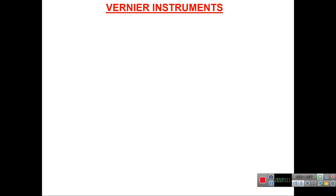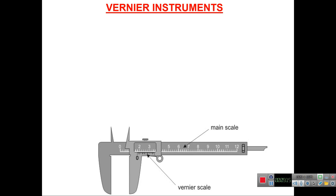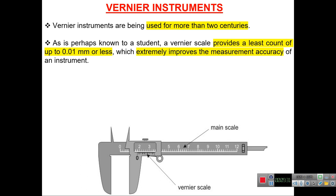Another linear measurement instrument is the vernier instrument — an example being the vernier caliper. Vernier instruments have been in use for nearly two centuries. A vernier scale provides a least count of up to 0.01 mm or less, which extremely improves measurement accuracy compared to the steel rule's least count of 1 mm or 0.5 mm.